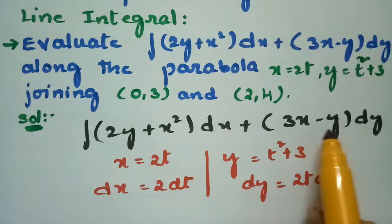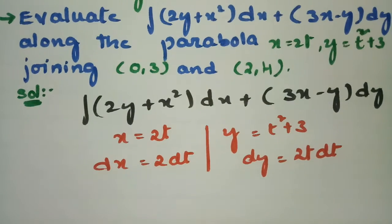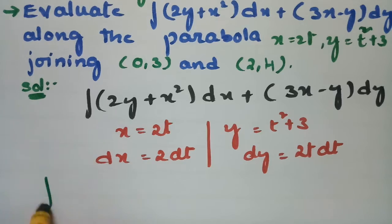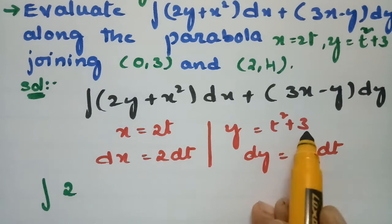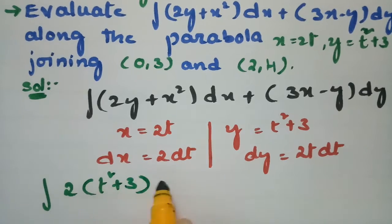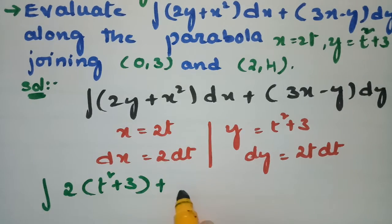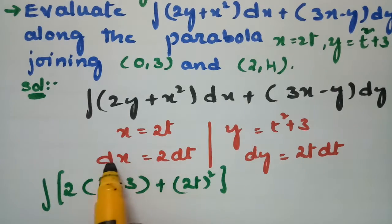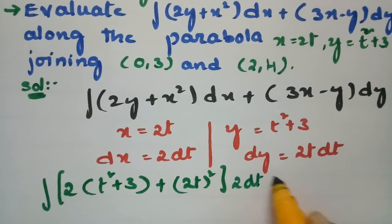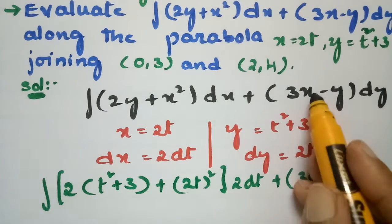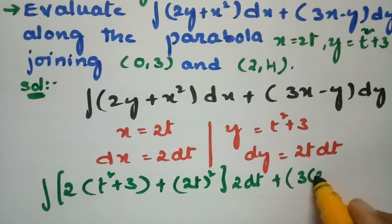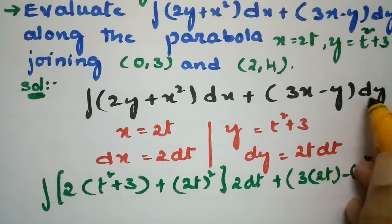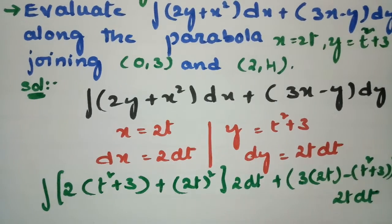Now I am going to transform these variables in terms of t. In place of y I write t² + 3, and in place of x I write 2t, so x² becomes (2t)². dx is 2 dt. Then for the second term: 3 times x is 3(2t), minus y which is (t² + 3), times dy which is 2t dt.